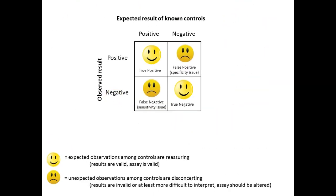In your lab, you have diagrams representing these outcomes. If you get a positive when you expected it, that's a true positive. If you get a positive when you expected a negative, you probably have a specificity issue — something made it positive that wasn't supposed to, like something from a male sample reacting with antibodies designed to detect a hormone specific to pregnancy. A false negative — negative but you expected positive — is usually a sensitivity issue.